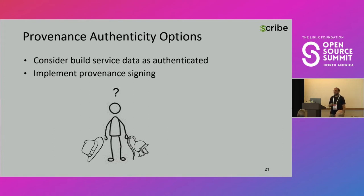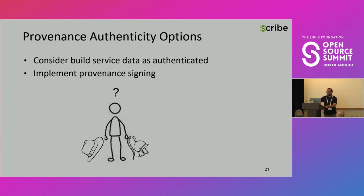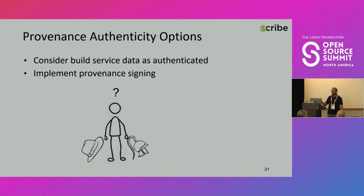In my opinion, there were two options to implement provenance authenticity. One is to consider the build service data as authenticated — there is logic behind it because I trust the build system for doing the build, and SALSA assumes the build system is trusted. So even if I give the build system the ability to sign, I would be trusting the build system for the signing. The other option could be to go ahead and implement provenance signing.